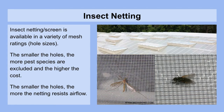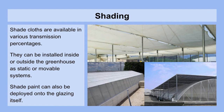Roof vents on a greenhouse can be covered in accordion screens so that no pests are able to enter through these openings. Shade cloths are available in various transmission percentages, meaning you can choose the shade cloth that reduces the light by a percentage that creates an optimal environment for your plants. By measuring the outside average and maximum sunlight intensities and comparing it to what you actually need for your crop to grow healthy, you can apply the appropriate reduction in lighting intensity. Shade cloths can be installed inside or outside the greenhouse as static or movable systems. In some cases, shade paint can also be deployed onto the glazing itself — once it's on there it remains until you remove it, but you can get very precise degrees of shading.